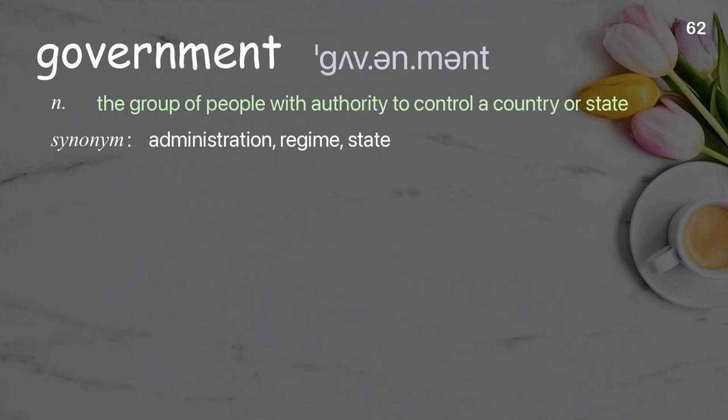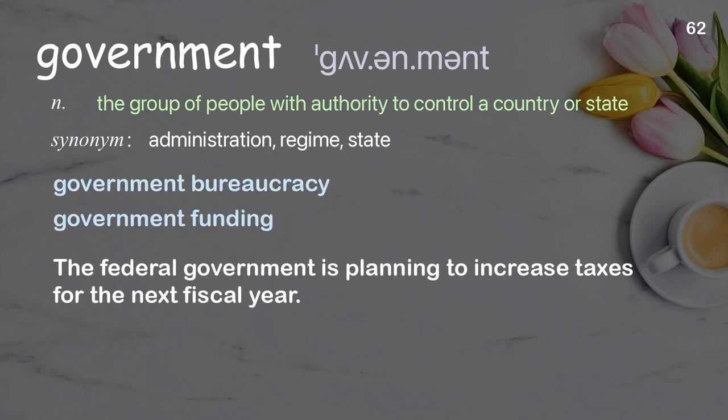Government: the group of people with authority to control a country or state. Examples: government bureaucracy, government funding. The federal government is planning to increase taxes for the next fiscal year.